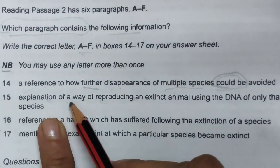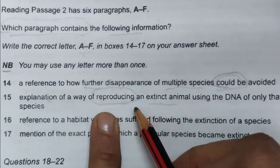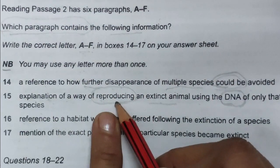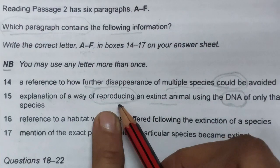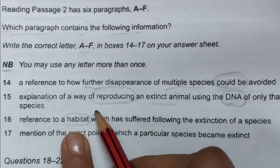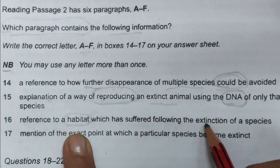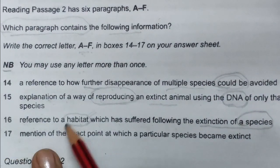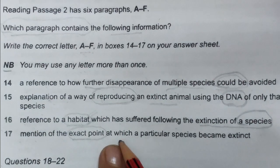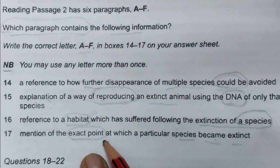Question 15 asks for 'an explanation of a way of reproducing an extinct animal using the DNA of only that species' — so reproducing using DNA is the key idea. Question 16 asks for 'a reference to a habitat — a particular place where animals live — which has suffered following the extinction of a species.' Question 17 asks for 'mention of the exact point at which a particular species became extinct' — so a specific location or moment.